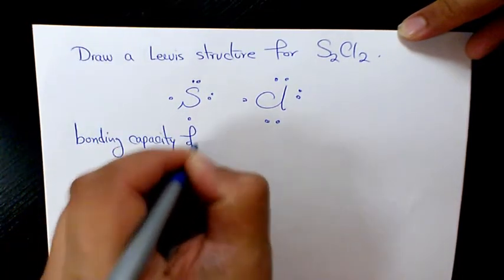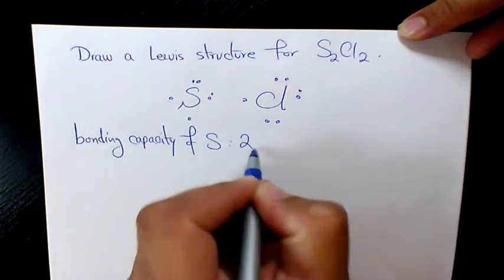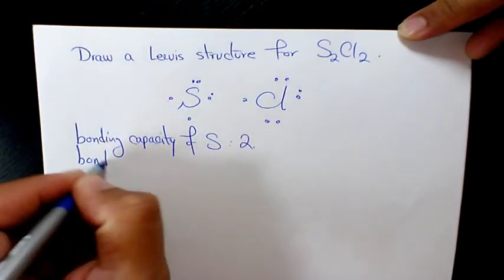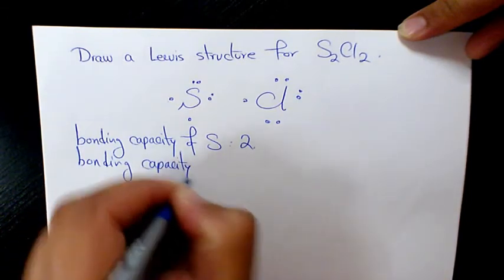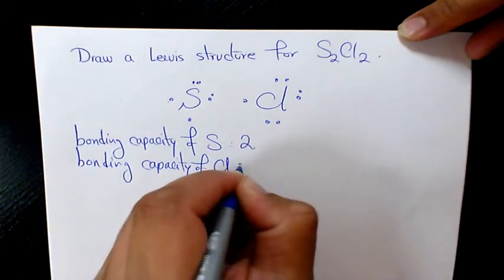The bonding capacity of sulfur is two, and the bonding capacity of chlorine is one.